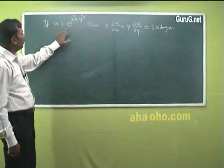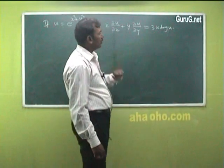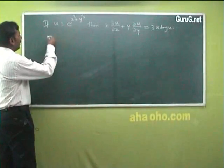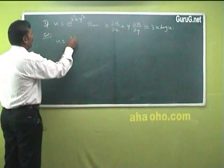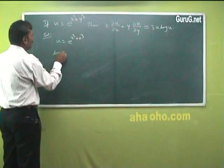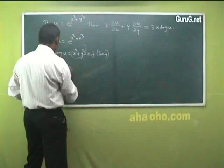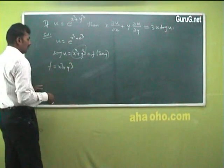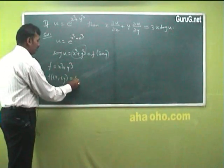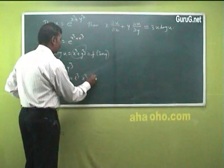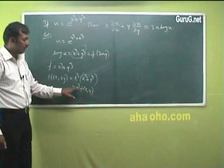The next problem: if u = e^(x³ + y³), then prove that x·∂u/∂x + y·∂u/∂y = 3u·log(u). We apply Euler's theorem again. Given u = e^(x³ + y³), we write log(u) = x³ + y³, and take f = x³ + y³. Replacing x and y by tx and ty: f(tx, ty) = t³x³ + t³y³ = t³(x³ + y³) = t³·f(x, y). So f is a homogeneous function of degree 3.